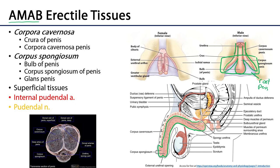Looking at the cross section of the body of the penis, we can see the corpora cavernosa superiorly or dorsally unified together, and the corpus spongiosum inferiorly or ventrally. The corpus spongiosum surrounds the spongy portion of the urethra. Recall the urethra is tripartite: there is the prostatic part, the membranous part, and the spongy part — which gets its name 'spongy' because it passes through the corpus spongiosum.